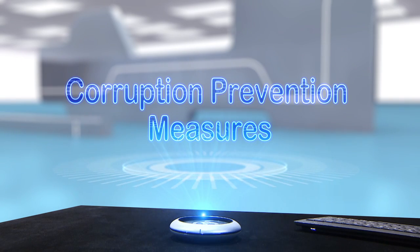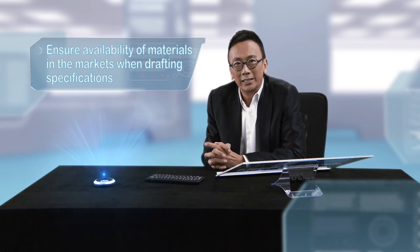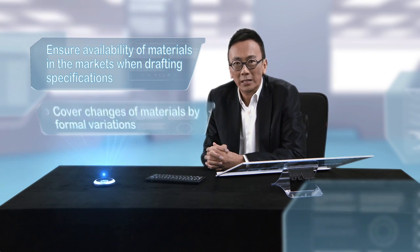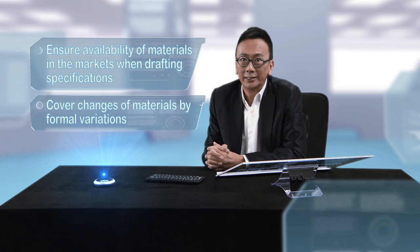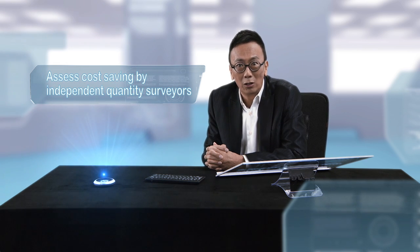The second risk is substituting materials with cheaper alternatives. Some construction contracts specify the materials to be used. Contractors may recommend architects to approve cheaper substitutes to pocket the price difference, or even resort to bribing architects to approve those substitutes. Consultants, when drawing up specifications, should ensure sufficient choices of materials are available. All materials must comply with specifications, and any changes should be covered by contract variations. When necessary, the client should engage an independent quantity surveyor to assess the cost savings and adjust payments to contractors accordingly.